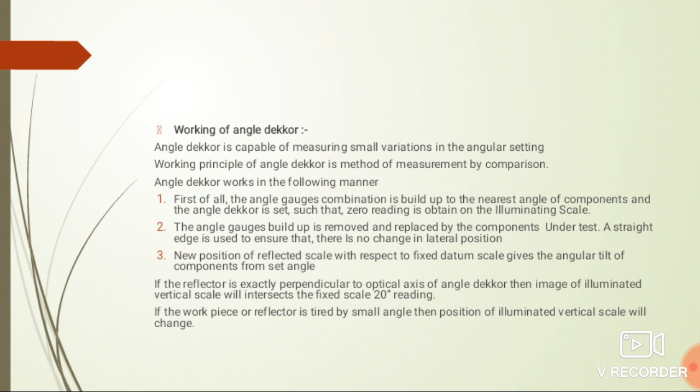Now working of angle dekkor. Working principle of angle dekkor is method of measurement by comparison. Angle dekkor works in following manner: First, the angle gauges combination is built up to nearest angle of components and the angle dekkor is set such that zero reading is obtained on the illuminating scale. The angle gauges build-up is removed and replaced by the components under test. A straight edge is used to ensure that there is no change in lateral position. Now position of reflector scale with respect to fixed datum scale gives the angular tilt of components from set angle.